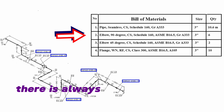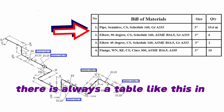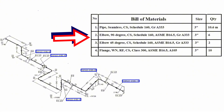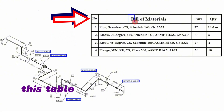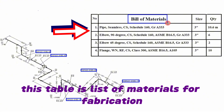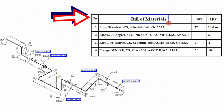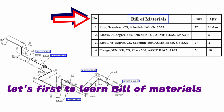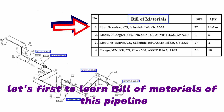There is always a table like this in pipe isometric drawings. This table is the list of materials for fabrication. Let's first learn the bill of materials of this pipeline.